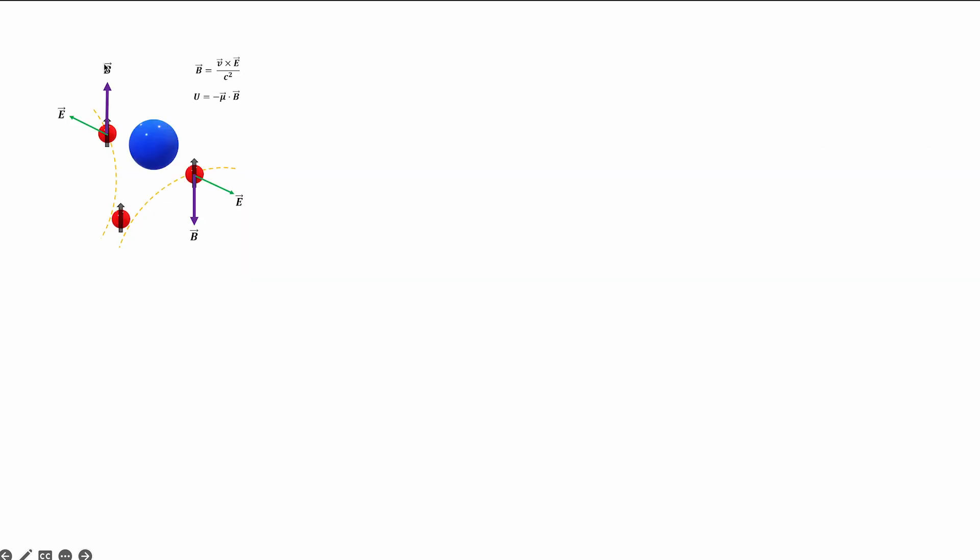This mechanism leverages the fact that in certain materials, like platinum, that have a high spin-orbit coupling, electrons scatter based on their spin state.